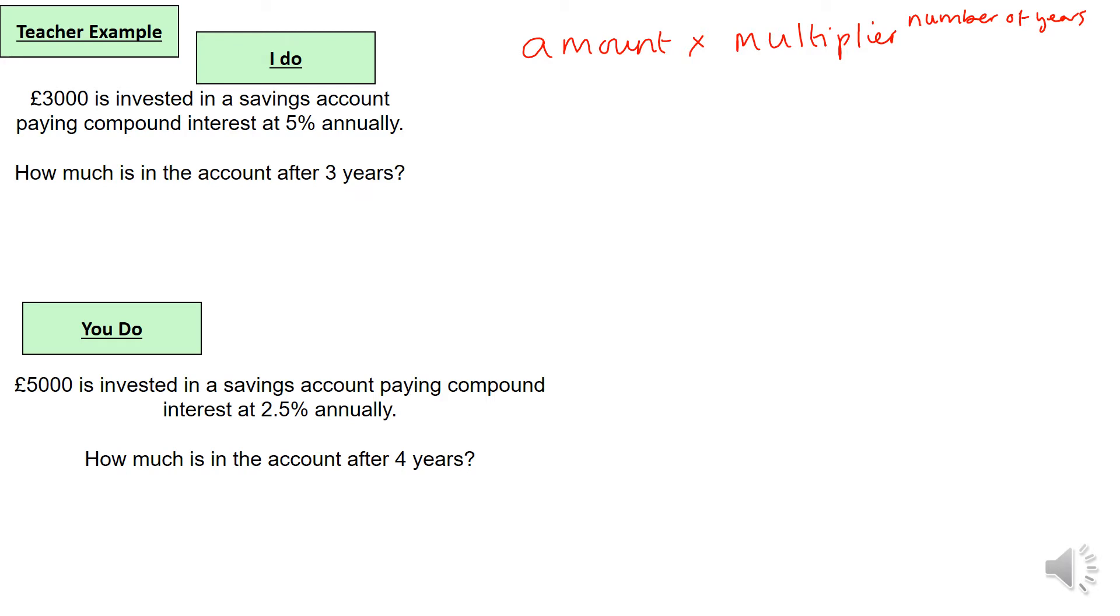In this case, where you need to do a bit of work is on the multiplier. Let's say we start off with 100 percent. At the end of each year with five percent added on, this makes 105 percent. Now to convert this into a multiplier we need to turn it to a decimal, which is dividing by 100, which would be 1.05. Now that's the multiplier.